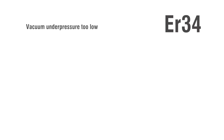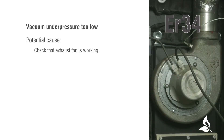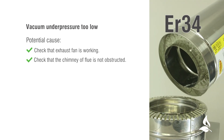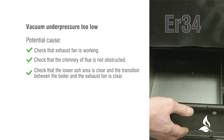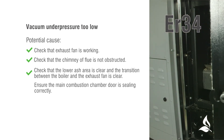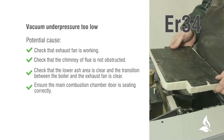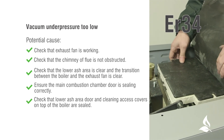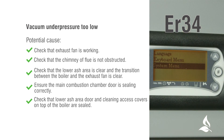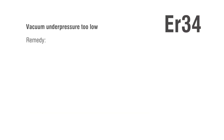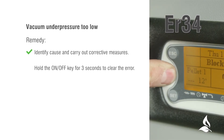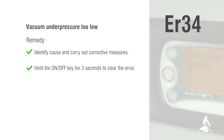ER34: Vacuum under pressure too low. Potential causes: check that the exhaust fan is working; check that the chimney or flue is not obstructed; check that the lower ash area is clear and the transition between the boiler and exhaust fan is clear; ensure the main combustion chamber door is sealing correctly; check that the lower ash area door and cleaning access covers on top of the boiler are sealed; check that the combustion fan settings are correct and are not set too high. Remedy: identify the cause and carry out corrective measures. Hold the on-off key for 3 seconds to clear the error, then restart the boiler.